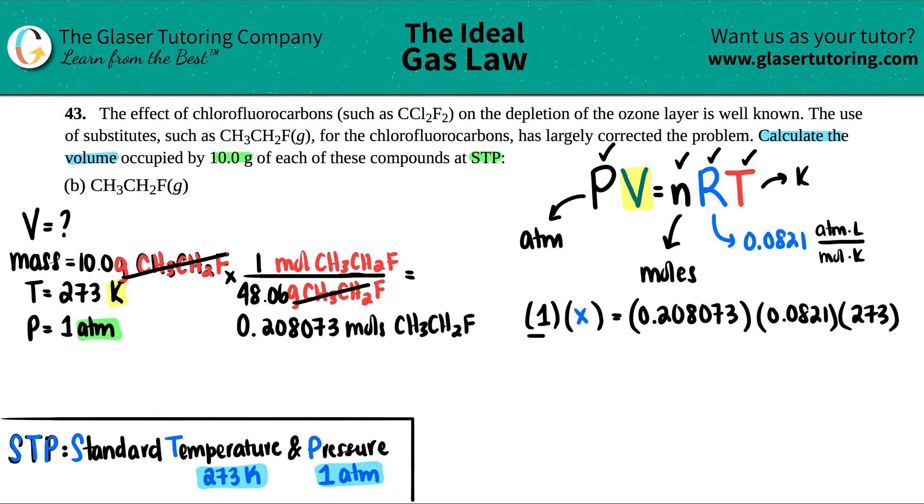So it looks like we just have to divide by 1, but basically we don't have to do anything because anything divided by 1 is itself. But just to show you guys, this goes bye-bye. And now we have X, which was our volume. And remember, the volume is going to be in liters because the L is in that R unit. So let's see, 0.208073 times 0.0821 times 273.